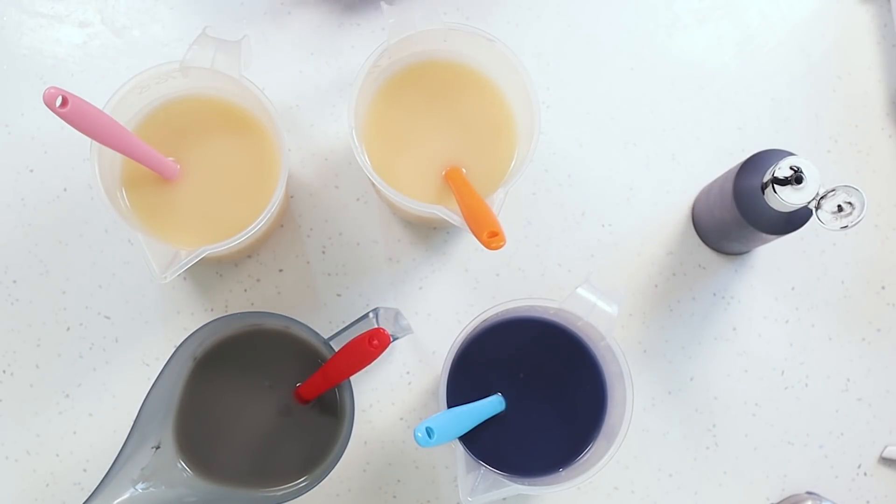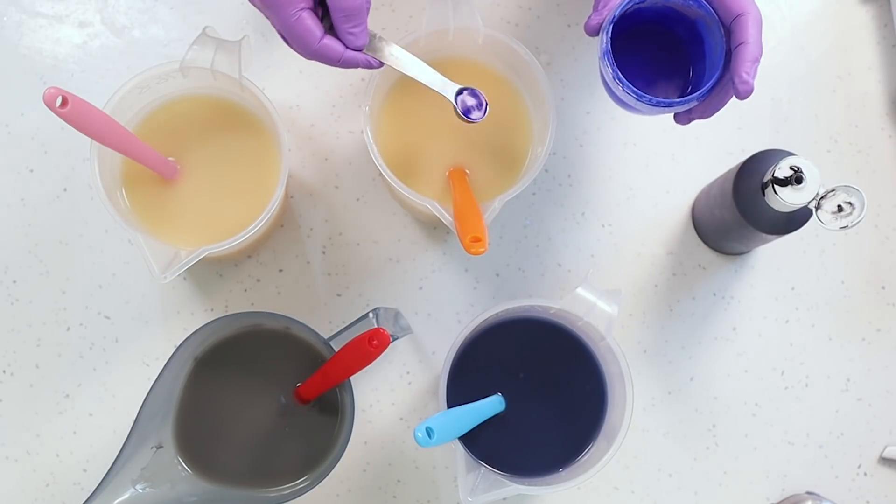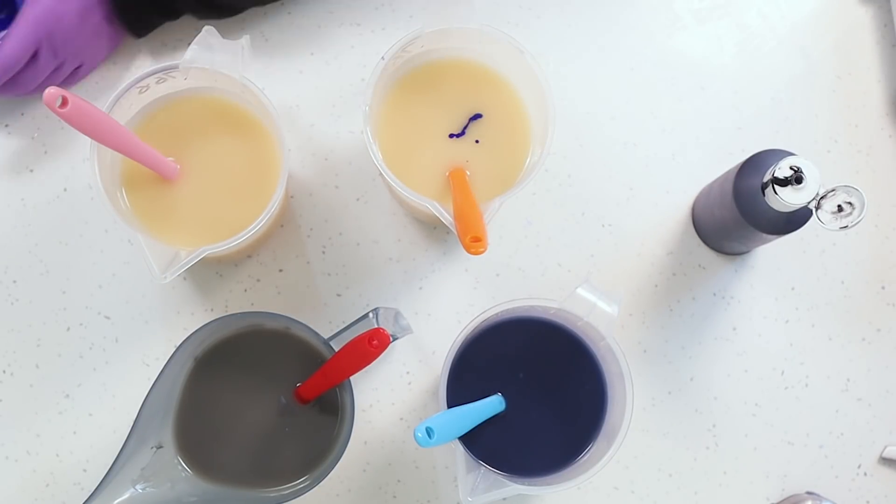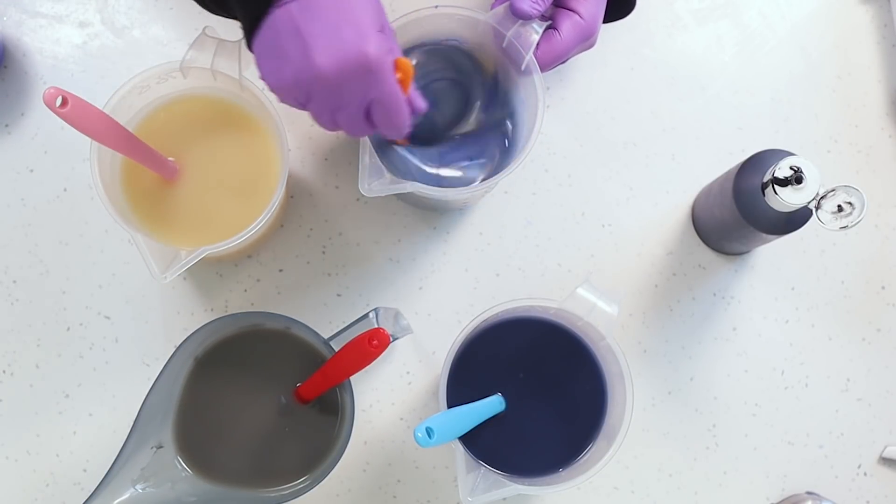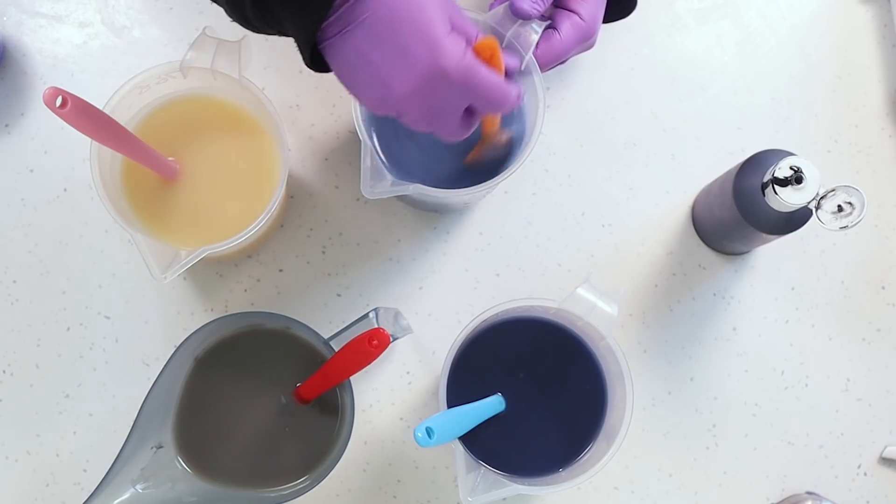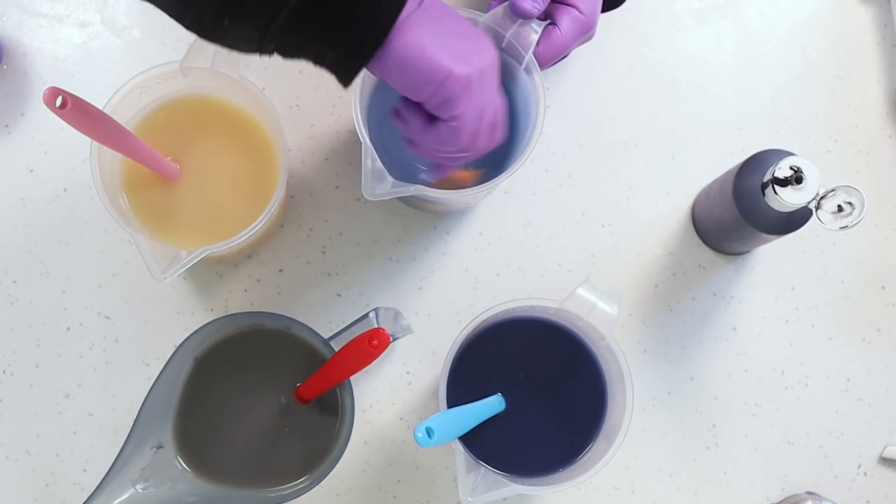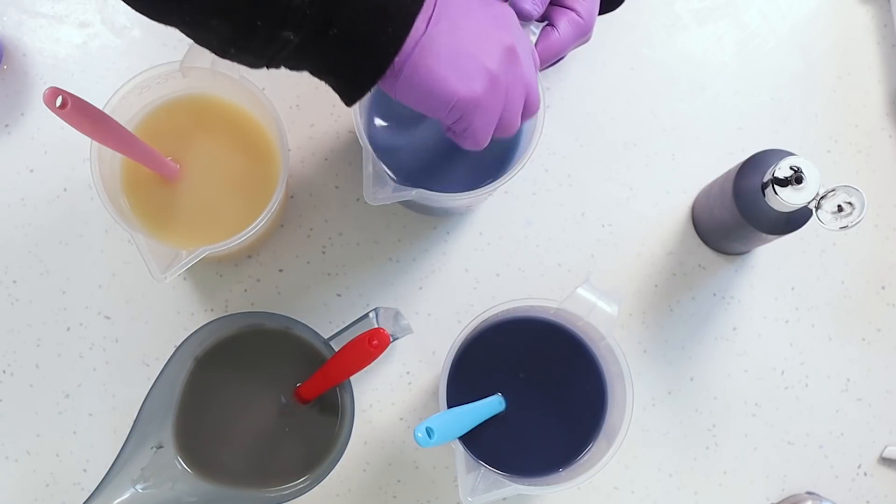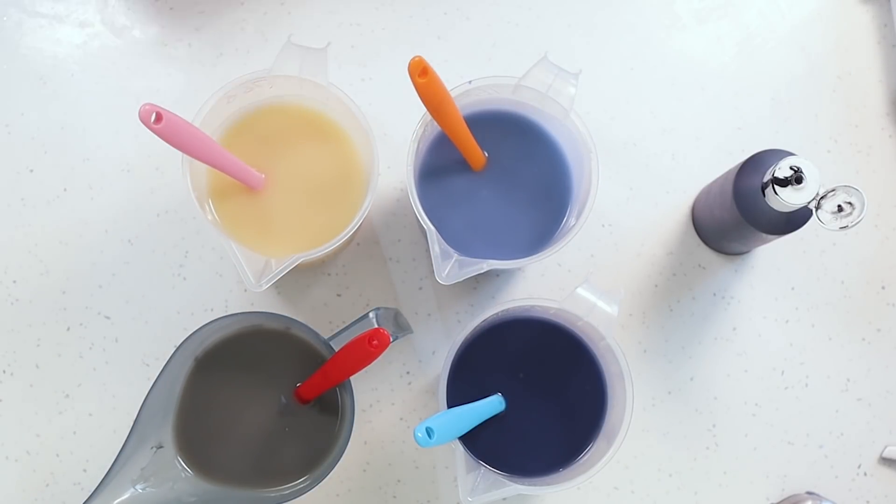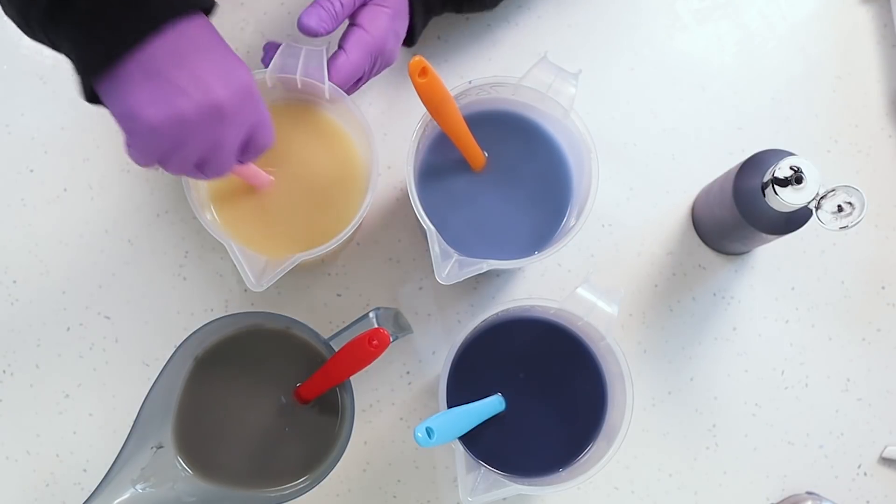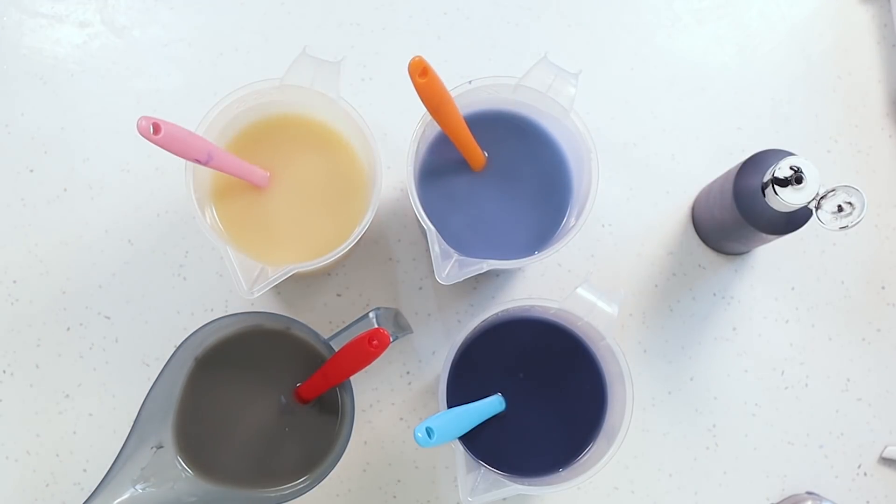For my indigo I always pre-disperse it in some water so that it mixes in nicely with the soap. I don't really like pre-dispersing things in water but this is a very small amount of indigo so it's not going to cause any problems with glycerin rivers or anything. I'll typically use my indigo at a rate of one percent of the oils I'm trying to color. And then finally I'll just leave that last bit of soap batter plain. After saponification my batter is really quite white so that'll be a nice white color.